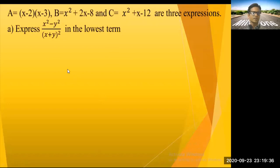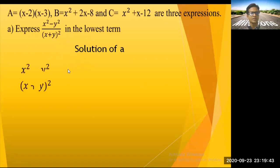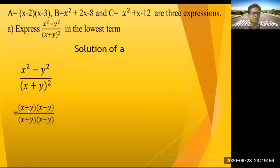Solution of (a): Express (x² - y²) / (x + y)² in lowest terms. We know x² - y² = (x + y)(x - y), using the identity a² - b² = (a + b)(a - b).